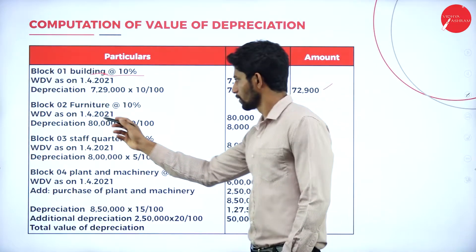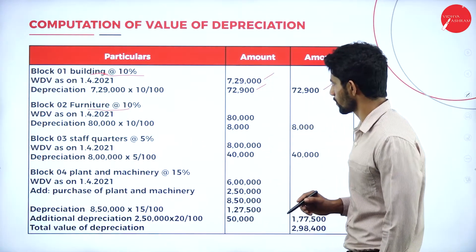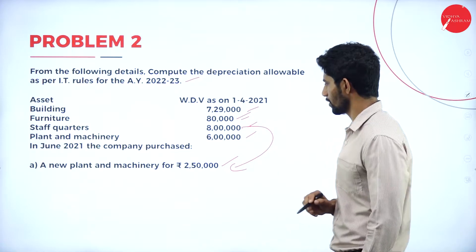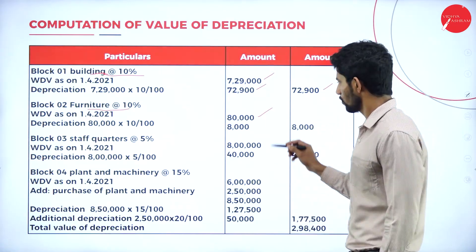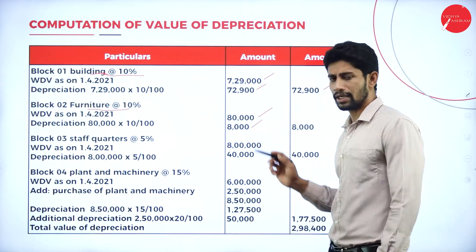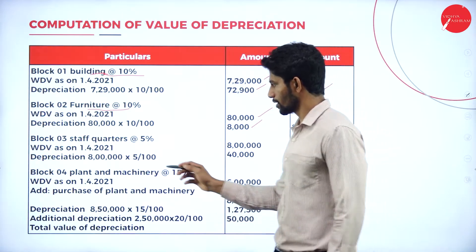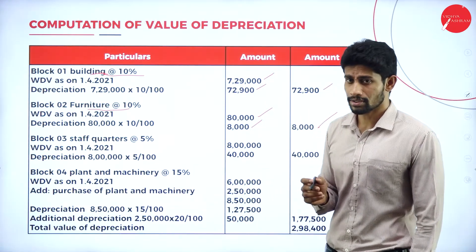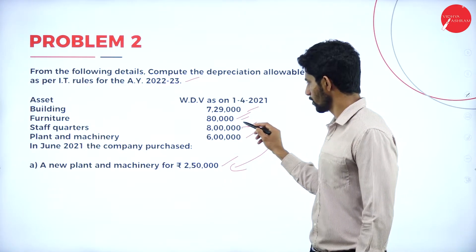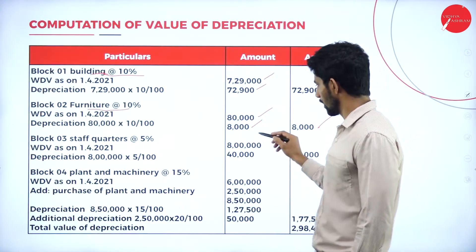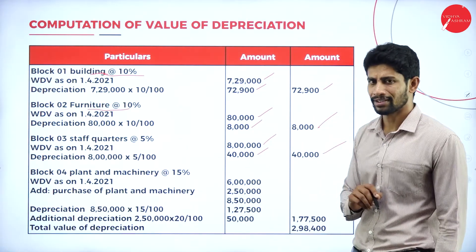Block 3 — Staff quarters at 5%: WDV as on 1-4-2021 is Rs. 8 lakhs. Calculate 5% depreciation on 8 lakh rupees, you will get Rs. 40,000. Block 4 — Plant and machinery at 15%: WDV is Rs. 6 lakhs. Add purchase of new plant and machinery of Rs. 2,50,000. You get Rs. 8,50,000. No plant and machinery was sold. Calculate 15% on Rs. 8,50,000 — you get Rs. 1,27,500.